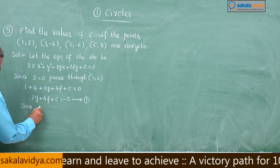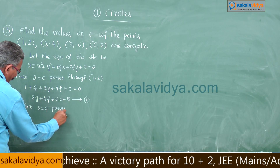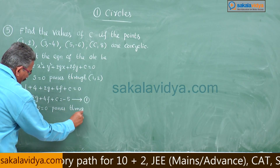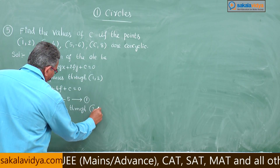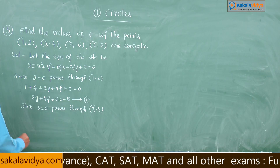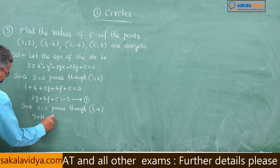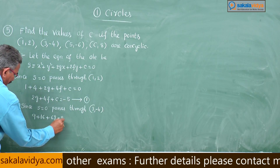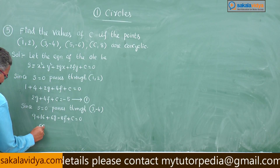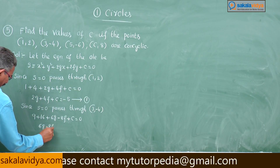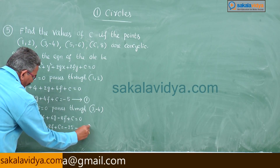Since S = 0 passes through the second point (3, −4): 9 + 16 + 6g − 8f + c = 0, giving 6g − 8f + c = −25. Call this Equation 2.